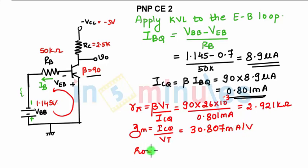And finally RO. RO is VA divided by ICQ. You know VA given in the equation. VA is given as how much? 120 divided by ICQ. We have found 0.801 milliampere. So this will give you 149.812 kilo ohms.